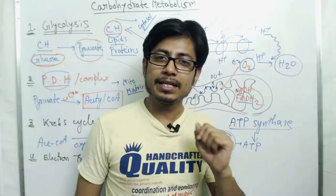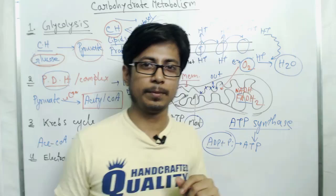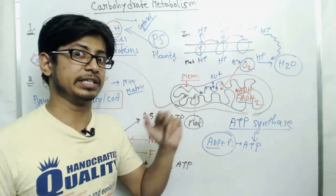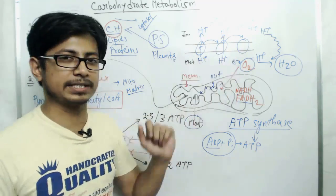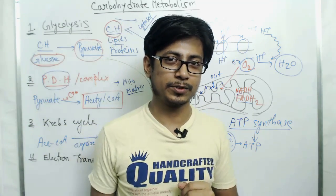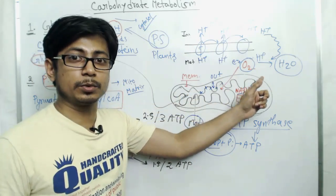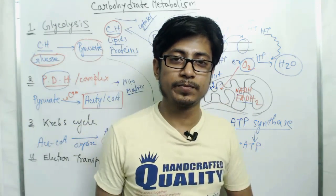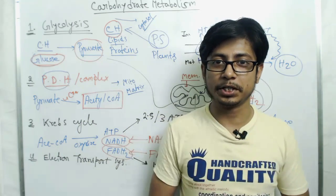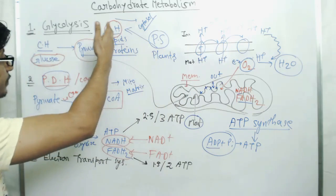Now let's look at each stage of the electron transport chain in detail — the names of all the enzyme complexes and how exactly this works. This idea of proton movement is known as the proton motive force, which helps us produce ATP at the end of cellular respiration.